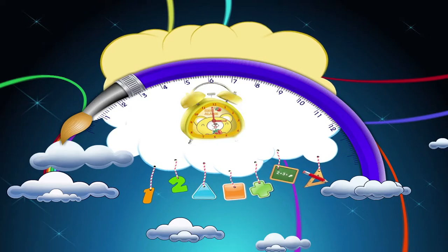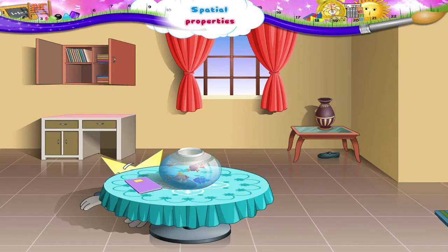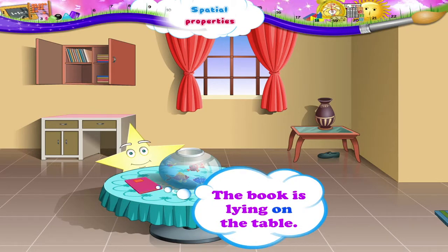Spatial Properties. Starry, where are you? Why are you hiding under the table? Oh, you are searching for your book. But Starry, the book is lying on the table.